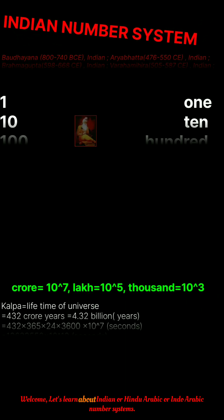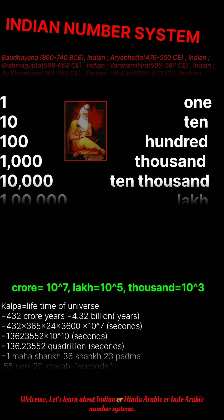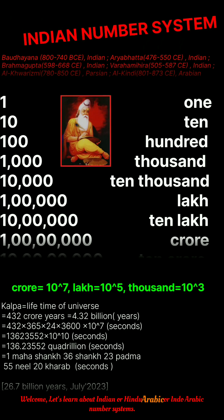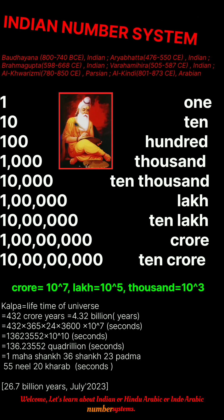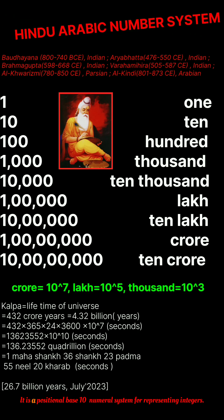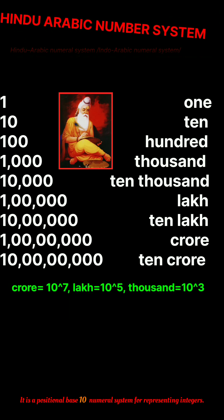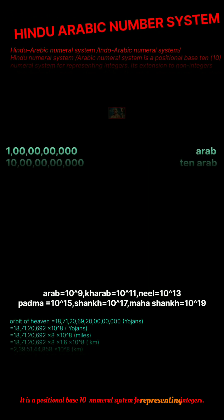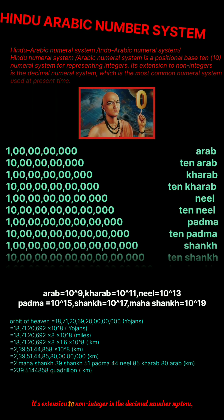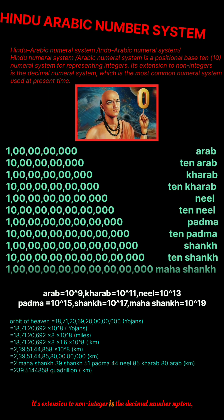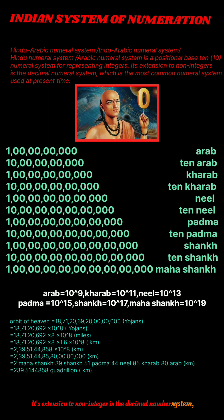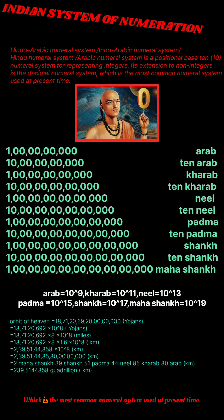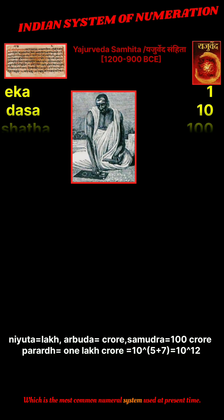Welcome. Let's learn about the Indian, or Hindu-Arabic, or Indo-Arabic number system. It is a positional-based numeral system for representing integers. Its extension to non-integers is the decimal number system, which is the most common numeral system used at present time.